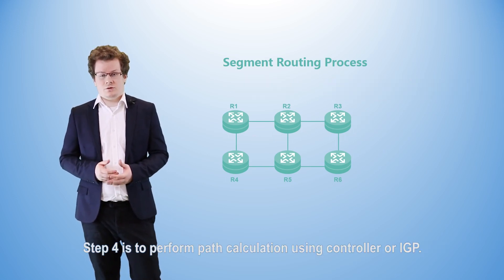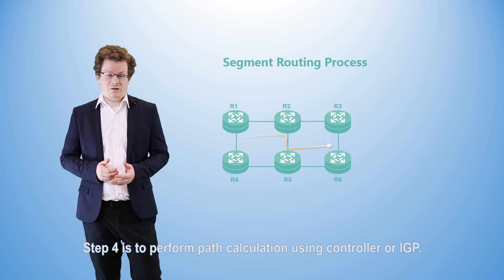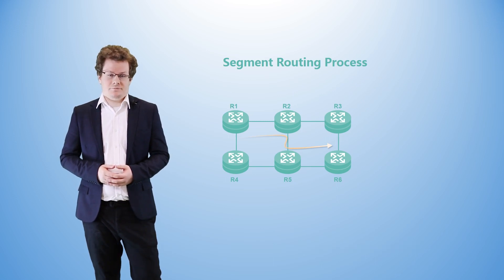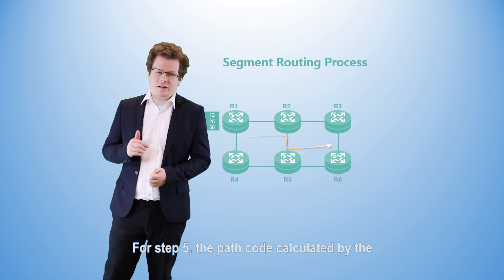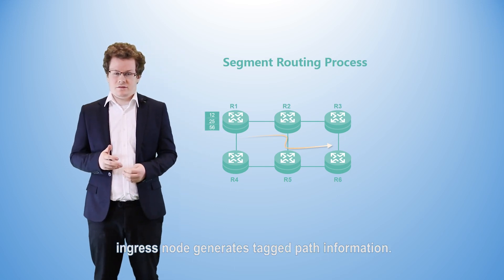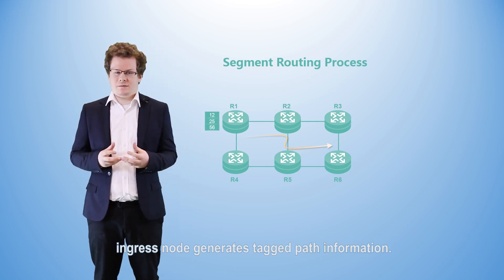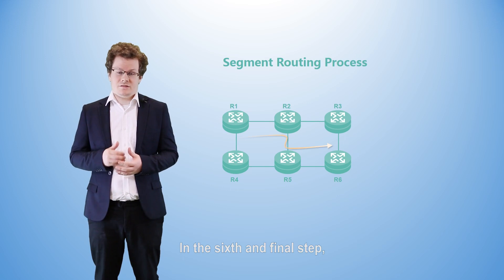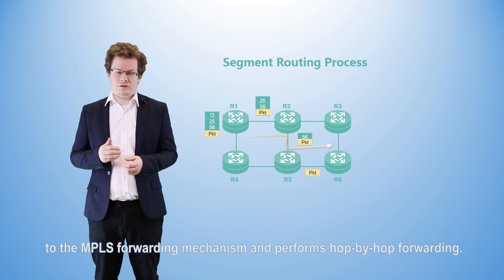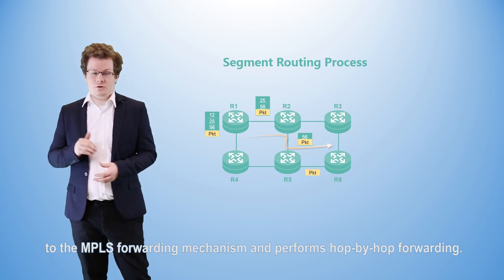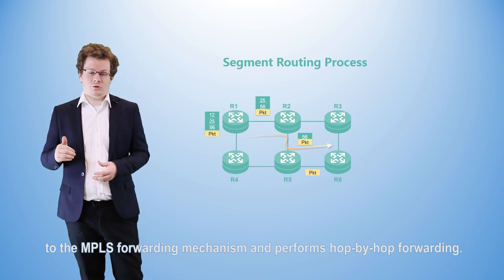The third step is advertising these generated SIDs to peers using IGP. Step four is to perform path calculation using IGP. For step five, the path code calculated by the ingress node generates tagged path information. In the sixth and final step, the ingress node encapsulates path information into data packets according to the MPLS forwarding mechanism and performs hop-by-hop forwarding.